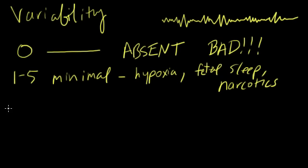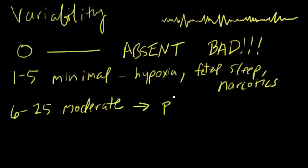So normal or moderate, as sometimes called, is from six to 25. And if that's the case, if you have moderate or normal variability, you can be reasonably certain that the pH of the baby is greater than or equal to 7.25. And I know 7.25 seems awfully low, but 7.25 is the lower threshold for fetal acidosis.